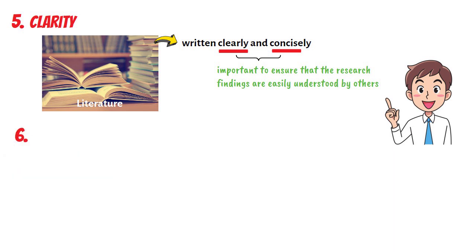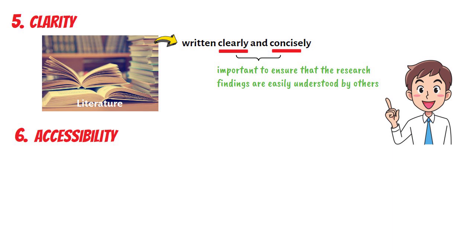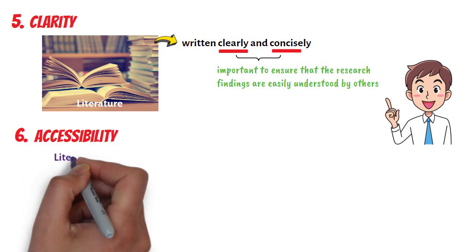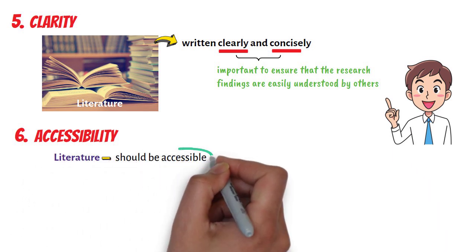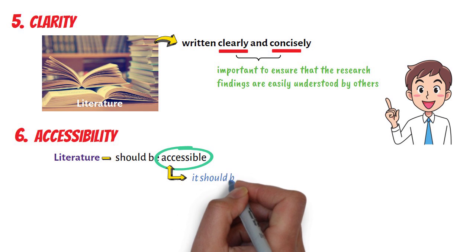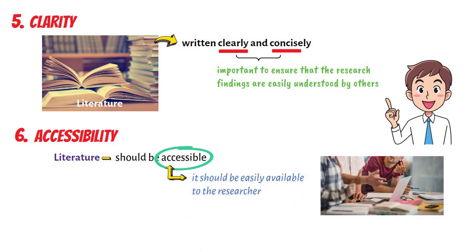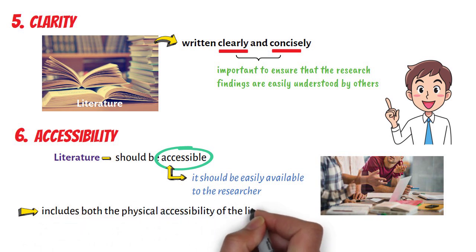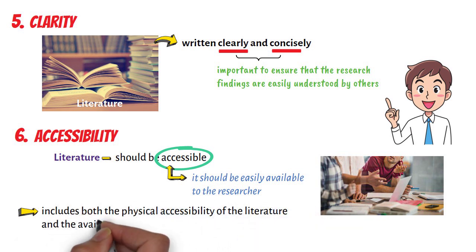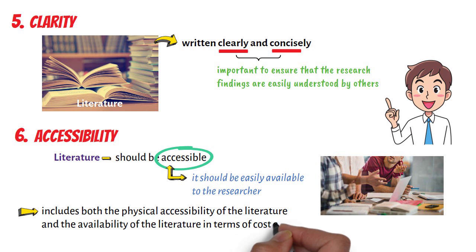Sixth, in terms of accessibility: literature should be accessible, meaning that it should be easily available to the researcher. This includes both the physical accessibility of the literature and the availability of the literature in terms of cost and language.